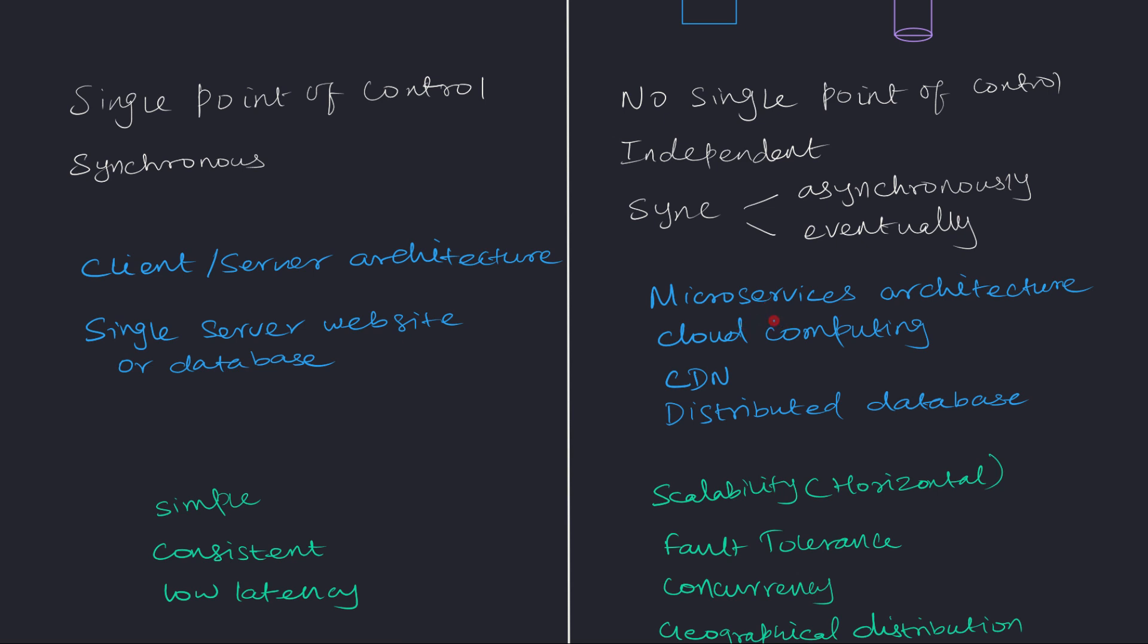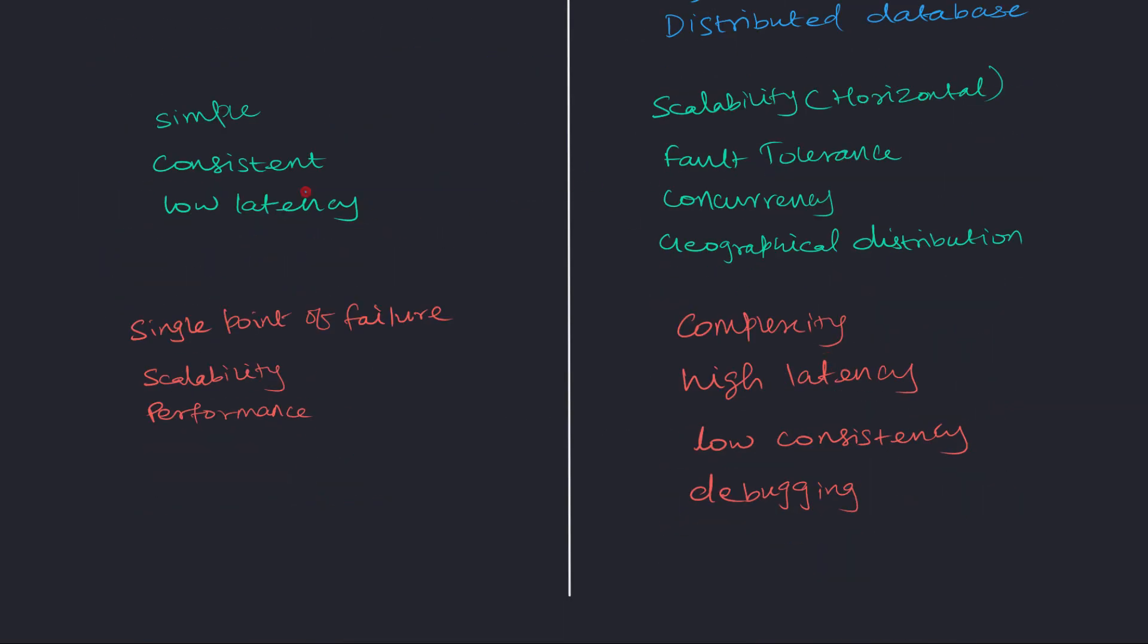On the distributed side some of the examples include microservices architecture, cloud computing and content distribution network and also distributed database. You will have multiple nodes of the same database. They'll have some mechanism to synchronize data among themselves.